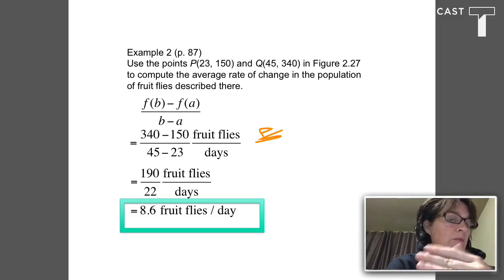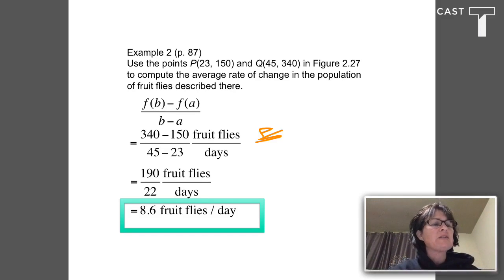So the next step: 190 fruit flies over 22 days, which simplifies to 8.6 fruit flies per day.